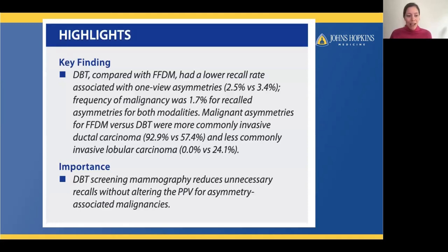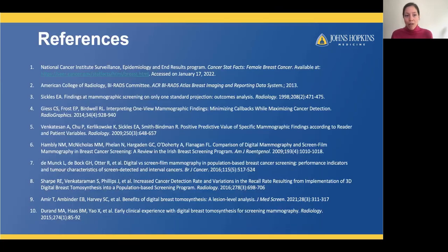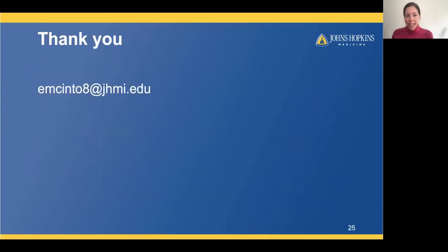To review the highlights of the study: DBT compared with FFDM had a lower recall rate associated with 1-view asymmetries. The frequency of malignancies was 1.7% for both modalities. Malignant asymmetries were more commonly IDC in the FFDM group compared to the DBT group, and less commonly invasive lobular carcinoma. Importantly, DBT screening mammography reduces unnecessary recalls without altering the PPV for asymmetry-associated malignancies. Thank you for your attention — my email address is included here if anyone has questions.